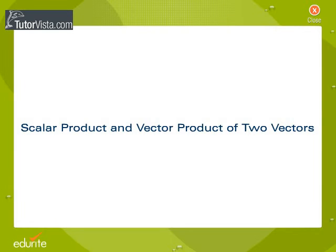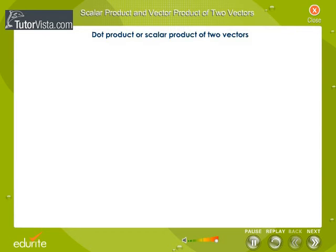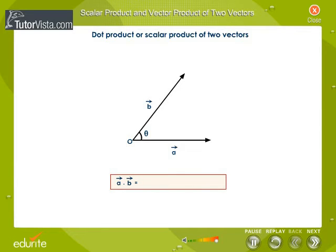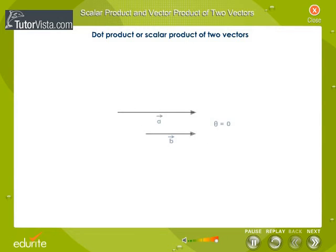Scalar product and vector product of two vectors. The dot product of two vectors A and B is defined as the product of the magnitudes of the two vectors multiplied by the cosine of the angle between them. The scalar product of two vectors is a scalar.